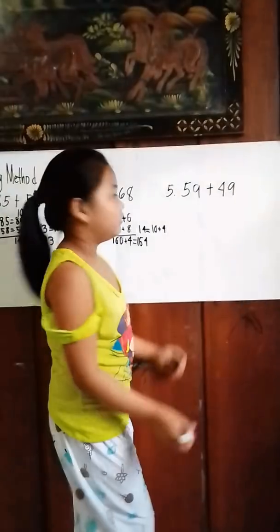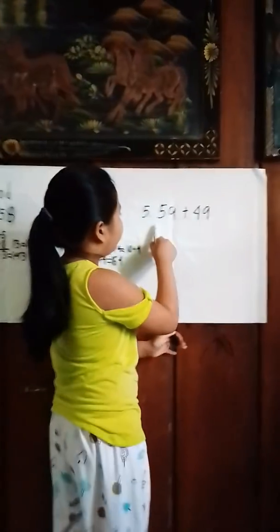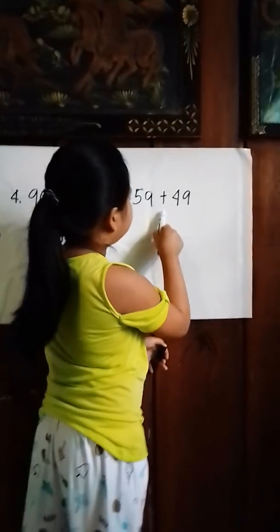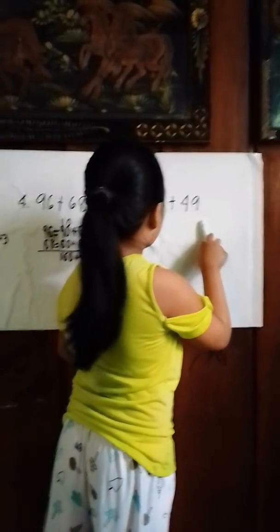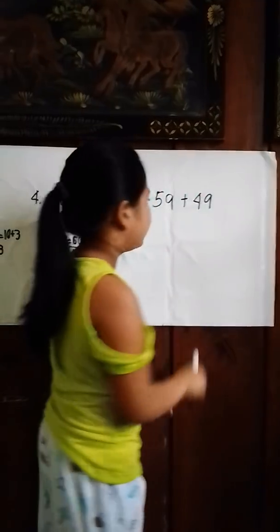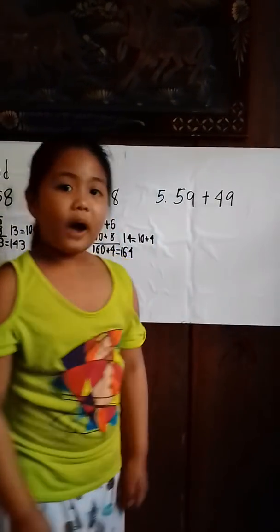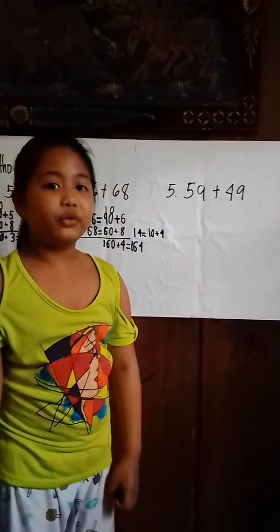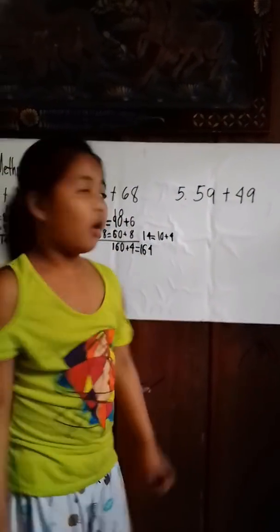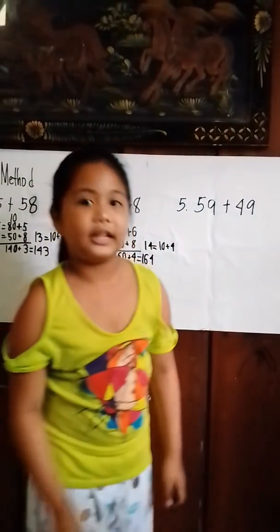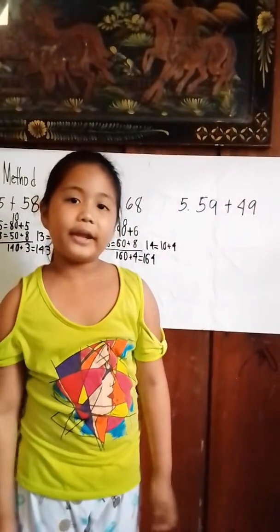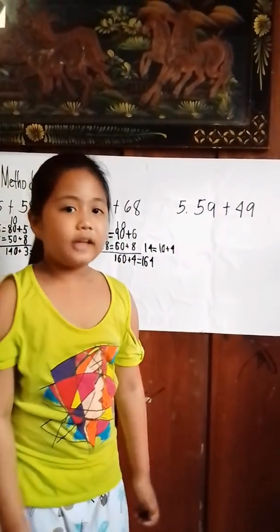Number 5: 59 plus 49. What is the regrouping of 59 and 49? Let's find out.